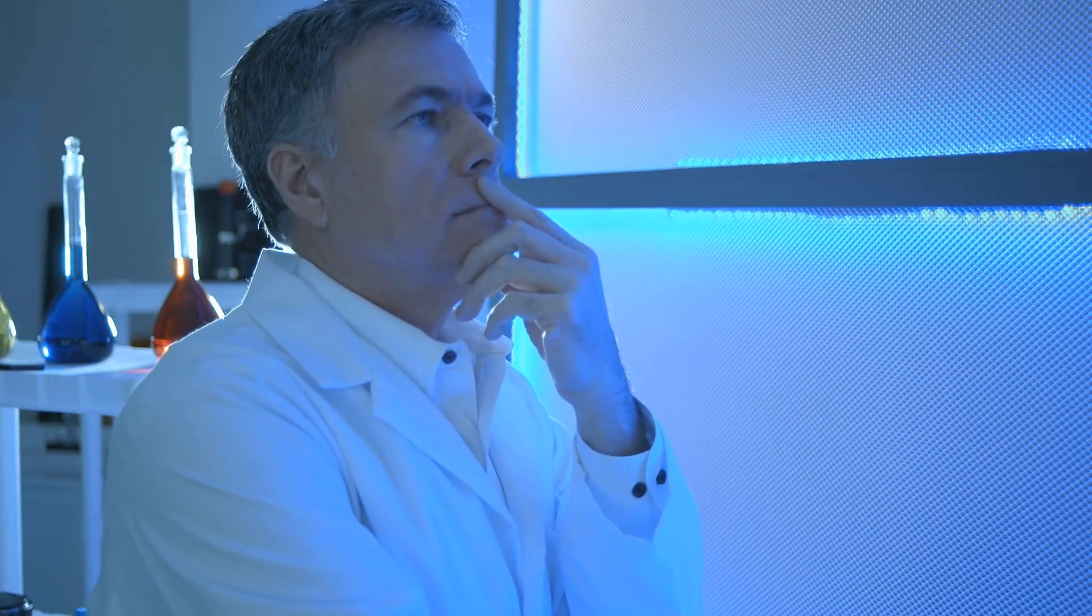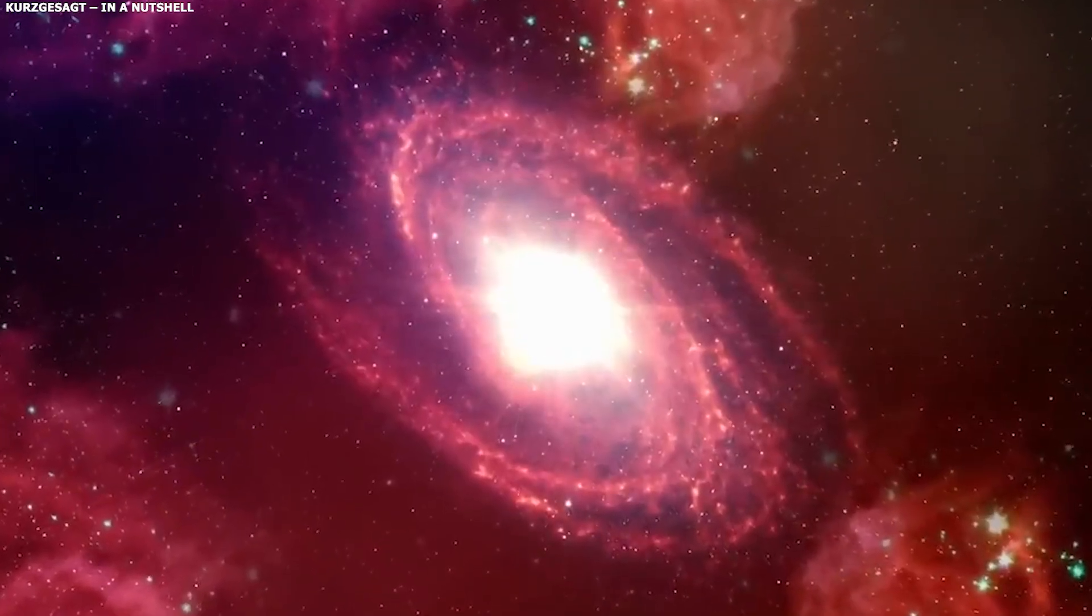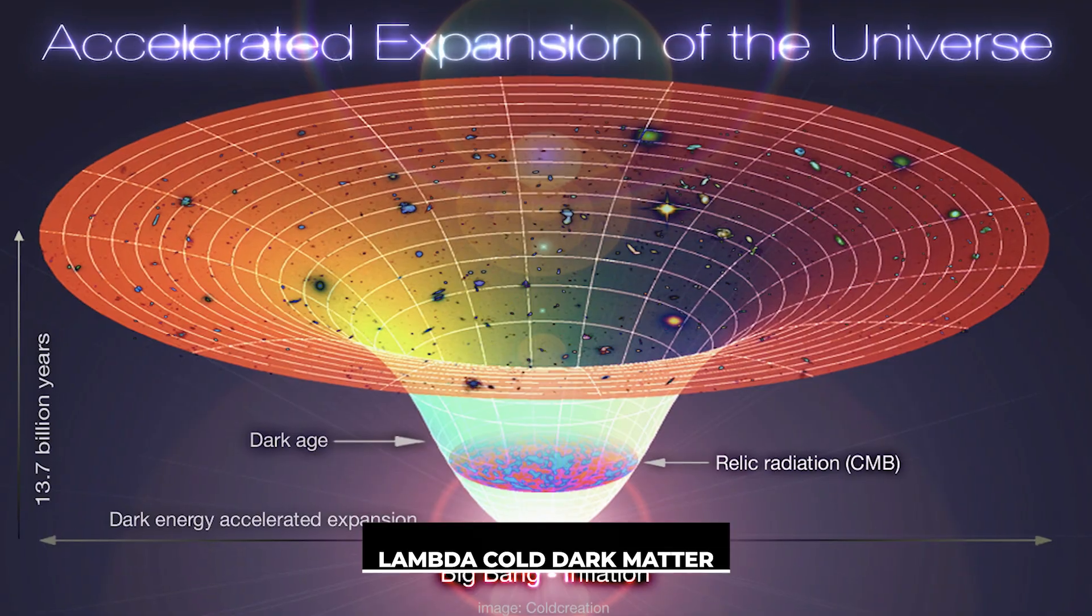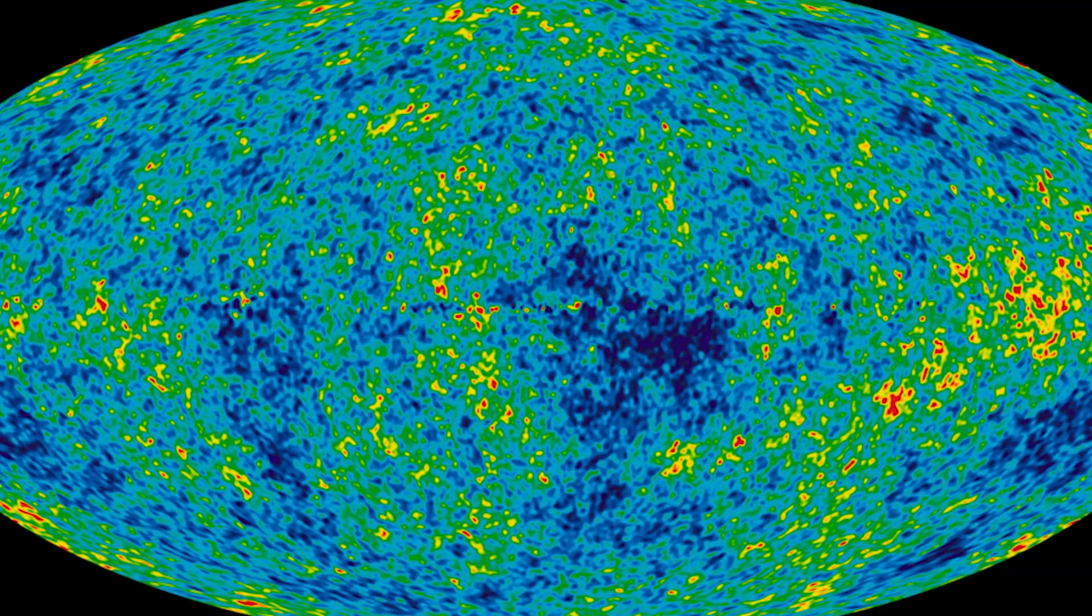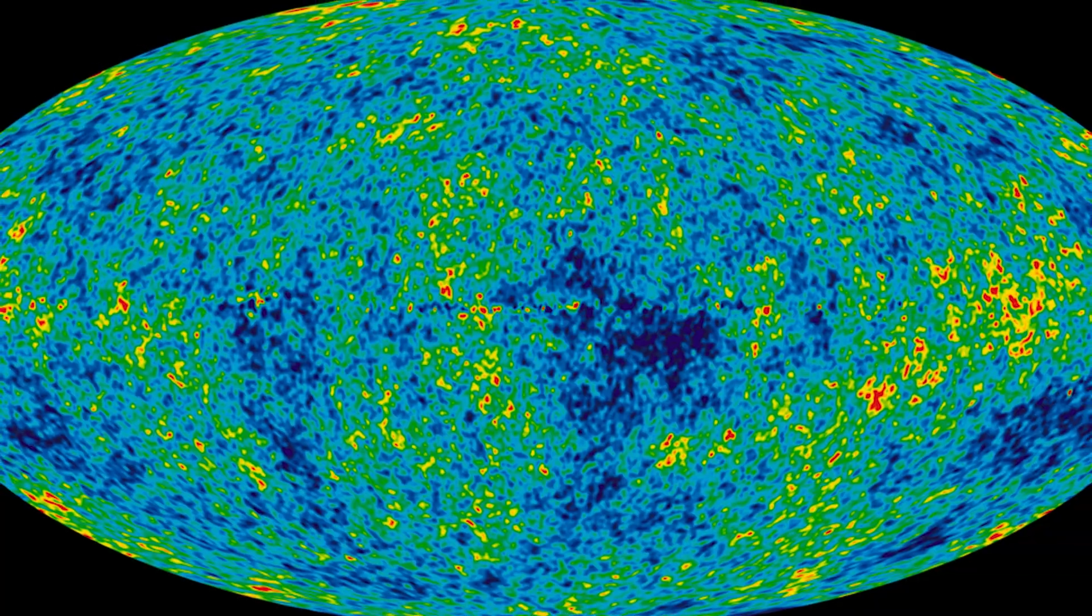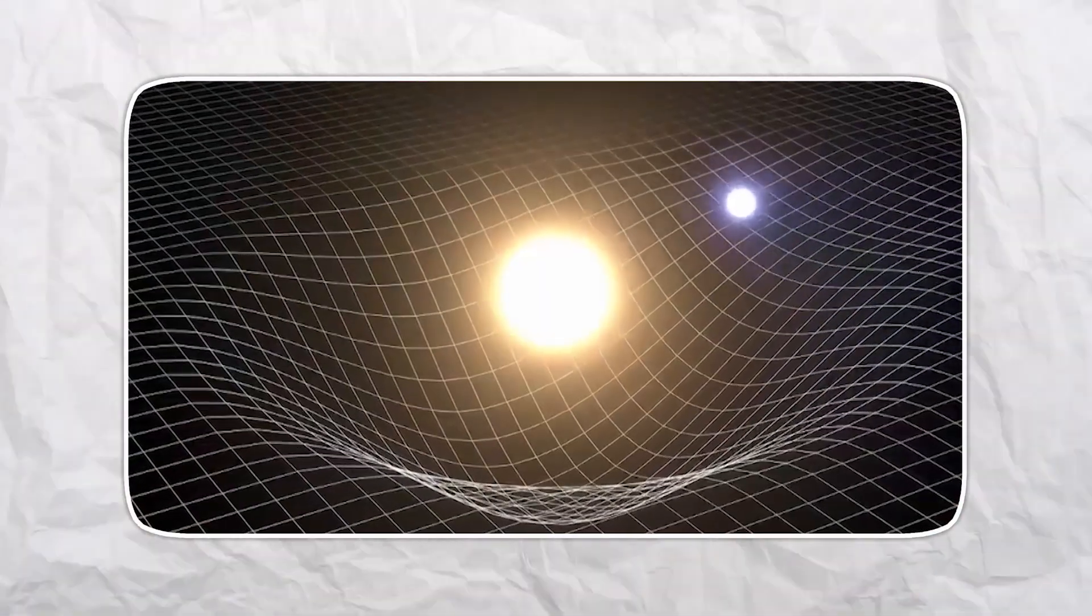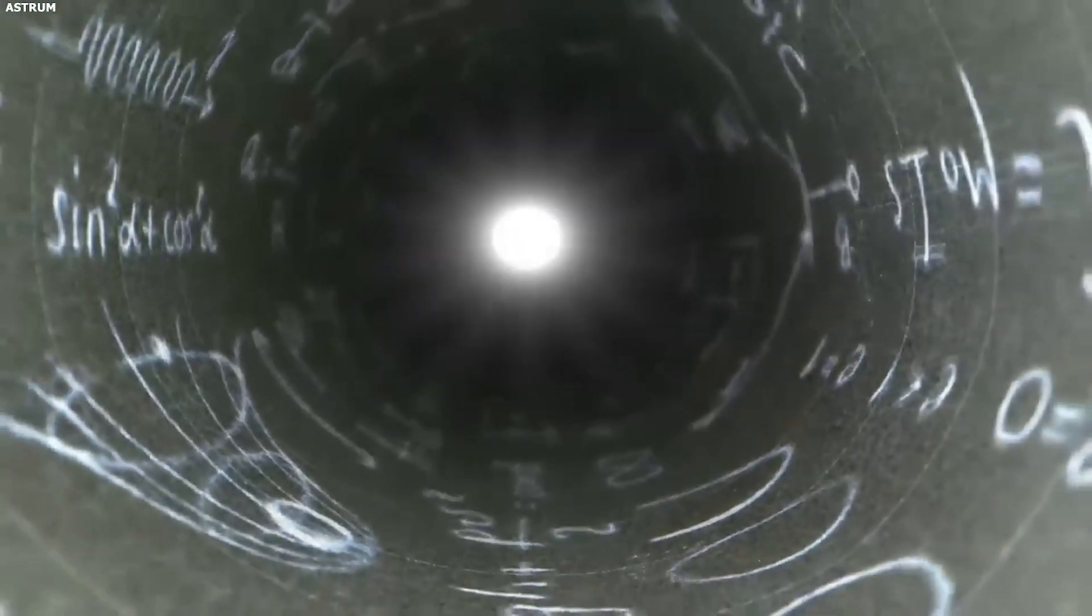The perfect theory. For decades, cosmologists had what they thought was a near-perfect understanding of the universe. It was called Lambda Cold Dark Matter, but everyone just calls it Lambda CDM, and it was beautiful in its simplicity. The story went like this.